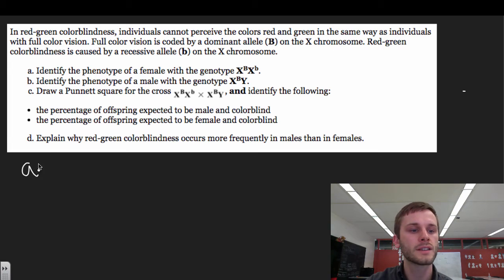So for part A, here it has a big B and a little b. The big B stands for the dominant allele, which is full color vision, and the recessive is colorblindness. So because they have one of these alleles that is full color vision, the phenotype for this female is going to be full color vision. They can see fine.